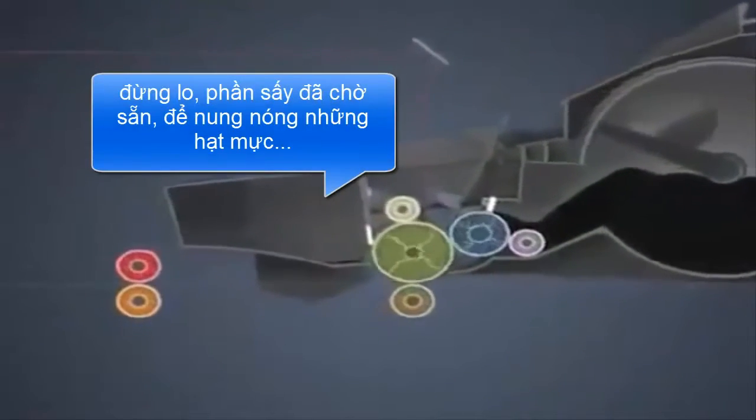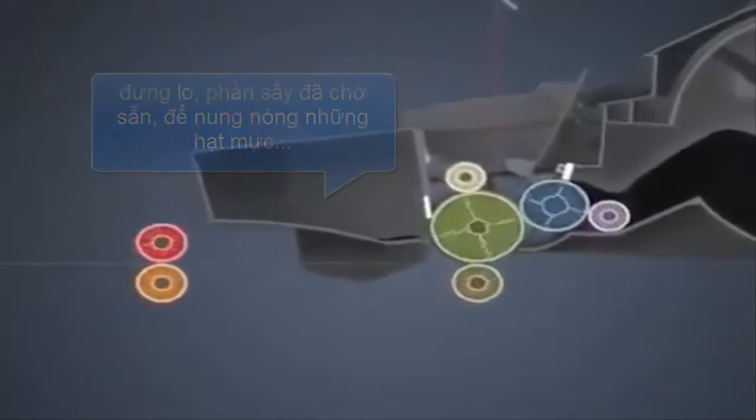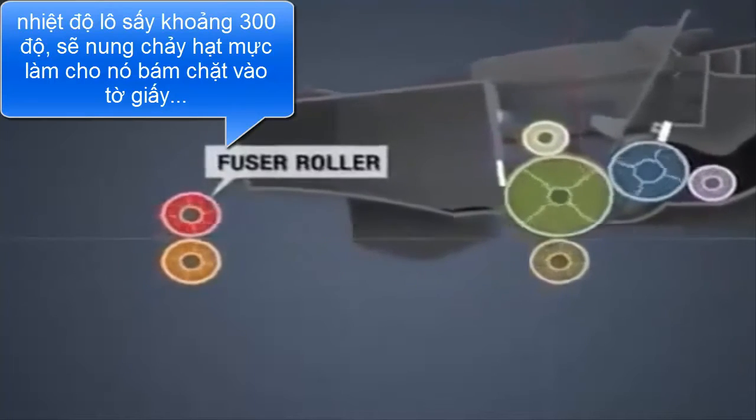Next, the image is made permanent through a combination of precisely controlled heat and pressure. As the paper approaches, the fuser rollers heat up to 225 degrees Celsius. In just 23 thousandths of a second, the powdered toner reaches its melting point and bonds onto the page.